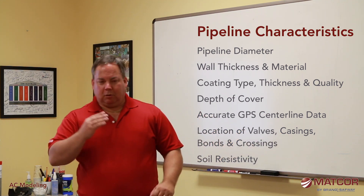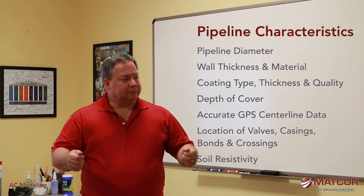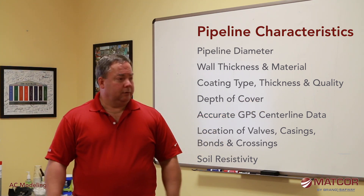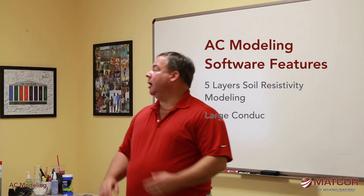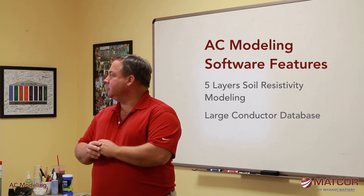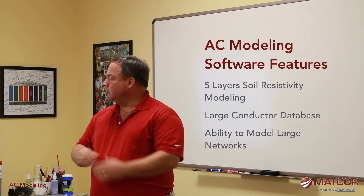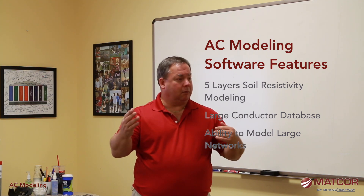We need a good picture of soil resistivity at different depths — 2-foot, 5-foot, 10-foot, and even 100-foot depth — at multiple locations along the pipeline. The SES software has the ability to model multi-layer soil effects up to five or more layers. We have a large conductor database including most transmission line conductors, all copper conductors, and mitigation devices like zinc ribbon. The software can model large networks including multiple power lines and multiple pipelines in the same corridor.